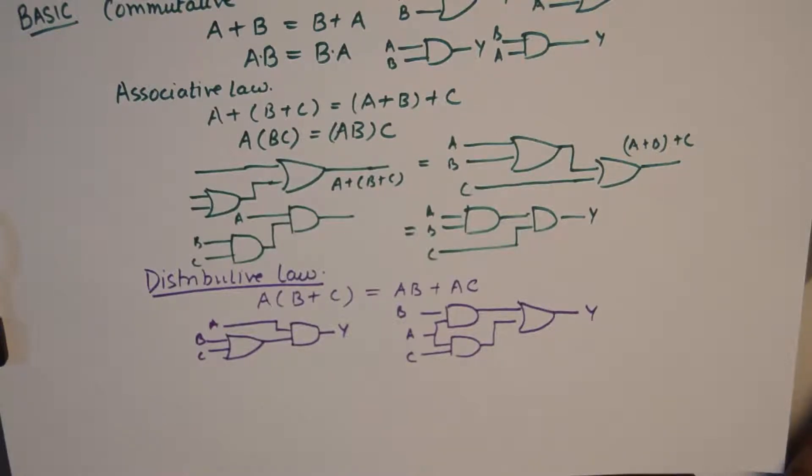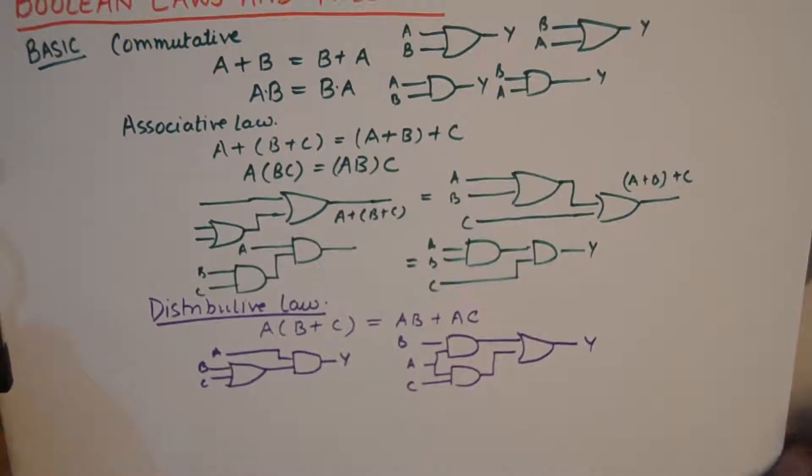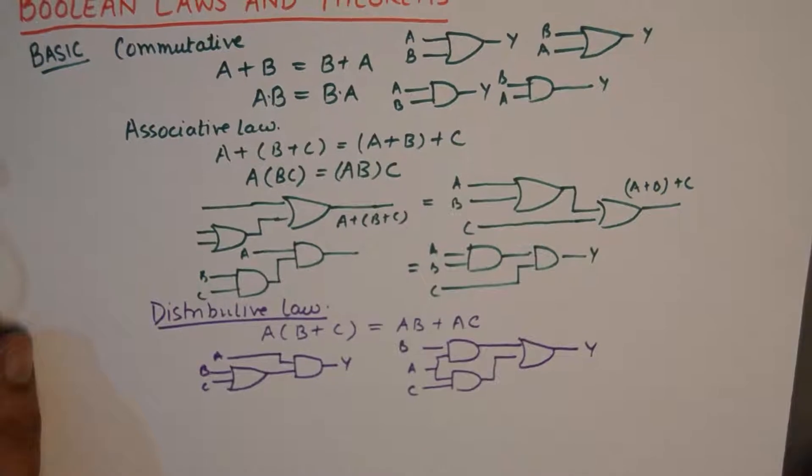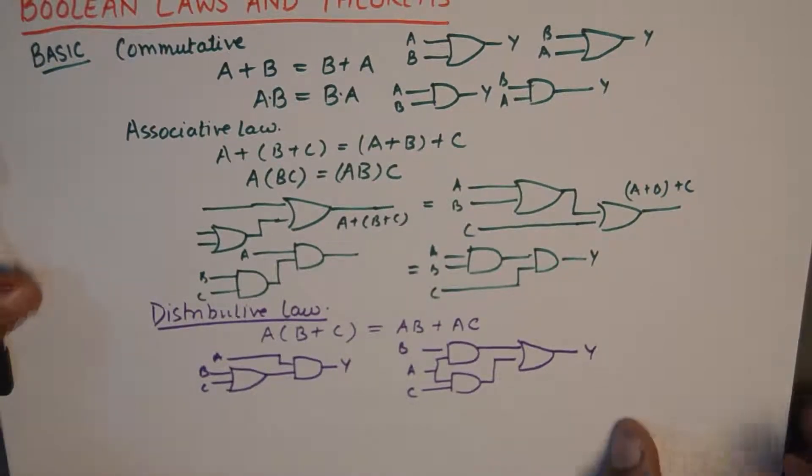You could do that by taking all possible values of A, B and C in a truth table and verify both left hand side and right hand side, as we do in the formation of truth tables.